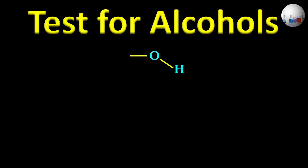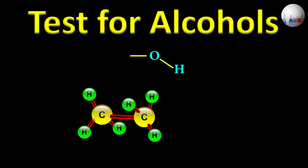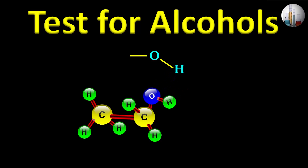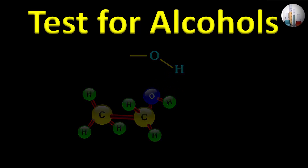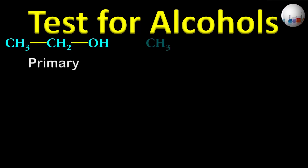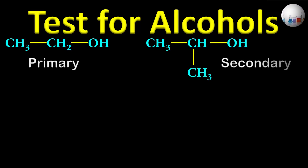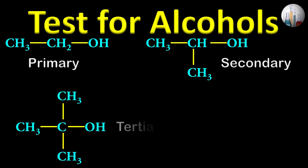Alcohols are organic compounds containing the hydroxyl functional group attached to an alkyl or aryl component. They are formed by replacing the hydrogen atom of a hydrocarbon with a hydroxyl group. Alcohols are generally classified as primary, secondary, and tertiary based on the nature of the alpha carbon, which is the carbon attached to the hydroxyl group.